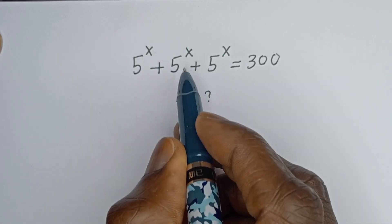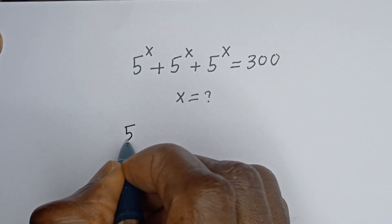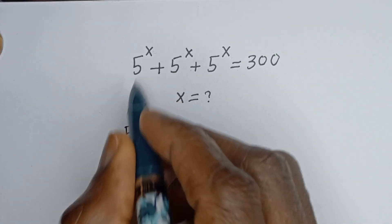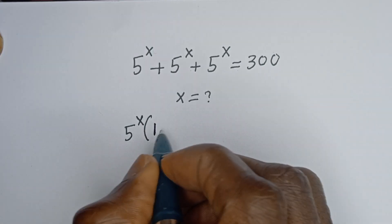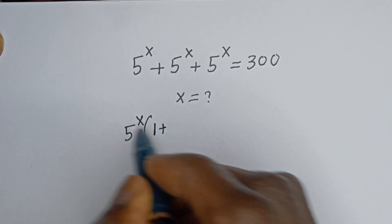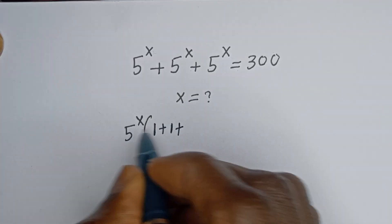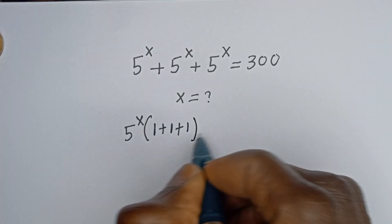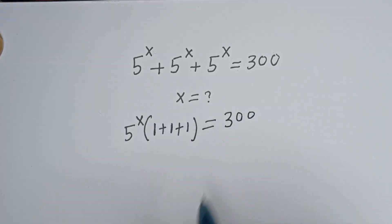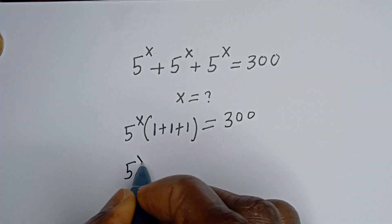Now if you look at this, 5 to the power of s is common — let's bring it out. We have 5 to the power of s, bracket: if you divide this by this we have 1, plus if you divide this by this we have 1, plus if you divide this by this we have 1, is equal to 300.